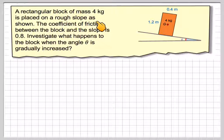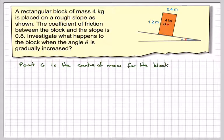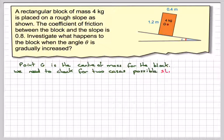Consider that the rectangular block of mass 4 kilograms is placed on a rough surface as shown. So we have a block here 4 kilograms, there is its centre of gravity, this is the slope and this is the angle here theta the slope makes with the horizontal. The coefficient between the block and the slope is 0.8. Investigate what happens to the block when the angle theta is gradually increased. So point G is the centre of mass for the block. We need to check for two cases: possible sliding or possible toppling.